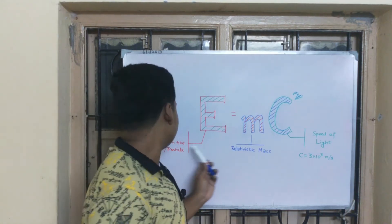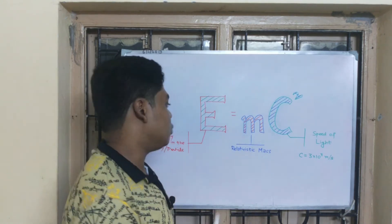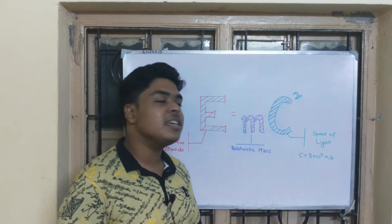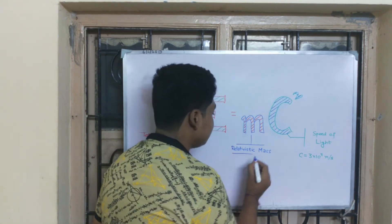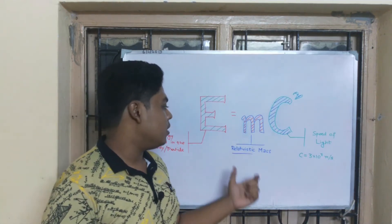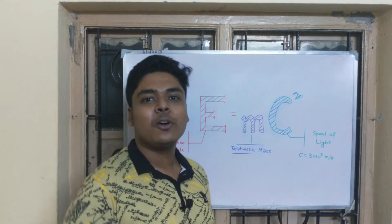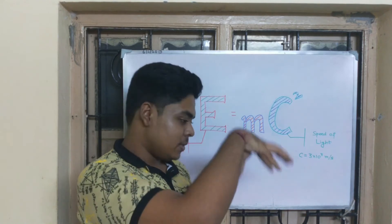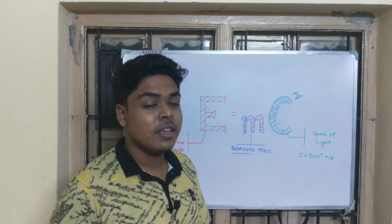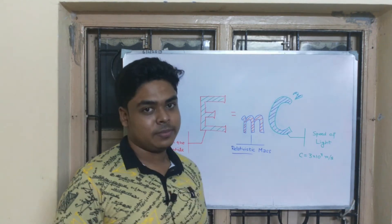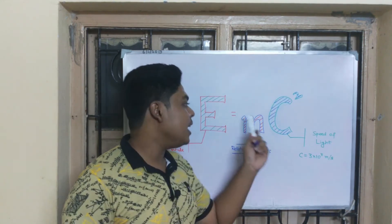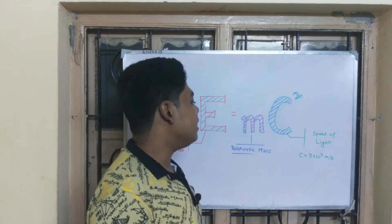M here is the relativistic mass. This is the relativistic mass — the exact mass. This is not simply equal to a fixed number of kilograms. This number is the relativistic mass, which is different from ordinary rest mass.